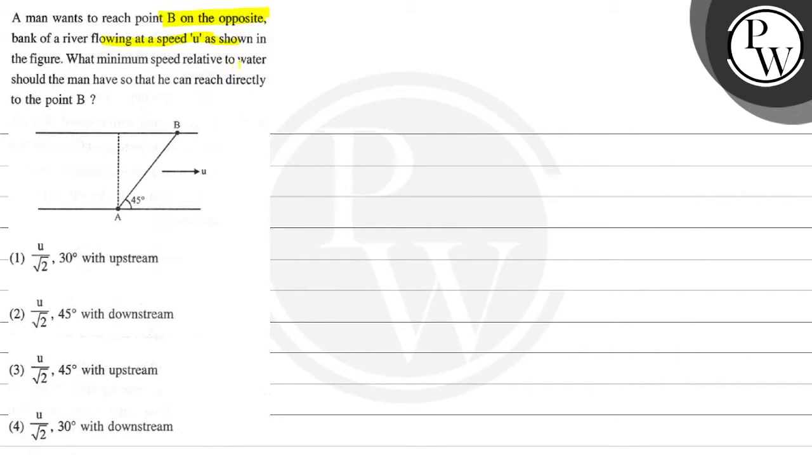What minimum speed relative to water should the man have so that he can reach directly to the point B? So here it starts and point B is reached directly. What do we do here in this case?